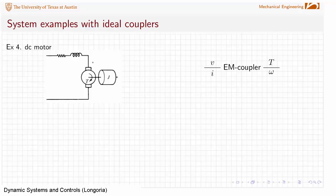Let's now work this little example here that is again a system that includes an ideal coupler, the ideal coupler being this ideal electromechanical conversion which is the basis for a lot of DC motors.